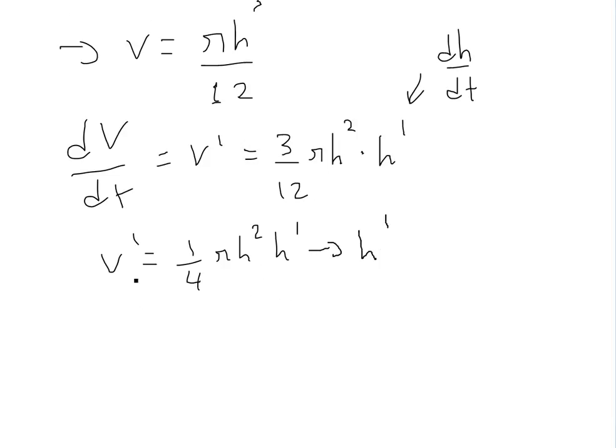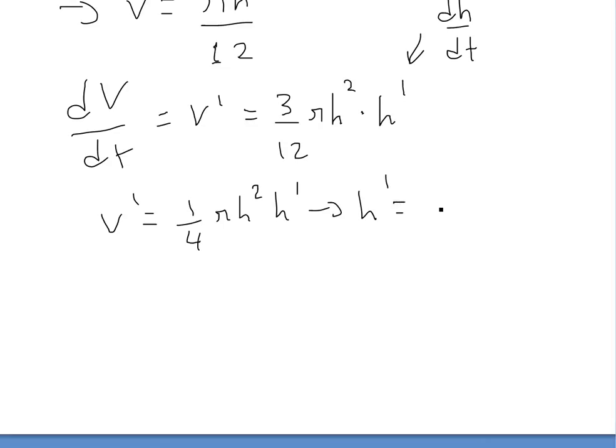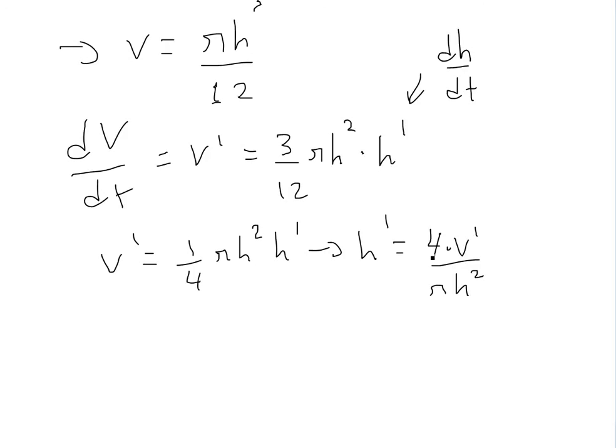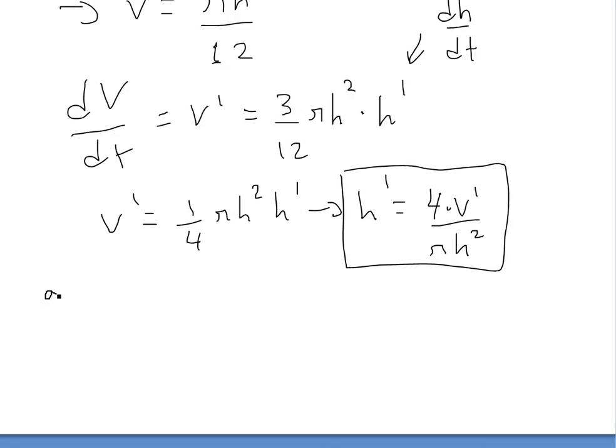Now we can solve for h prime in terms of V prime. Basically relate the two rates together. So we'll get 4 times V prime divided by π h² right here. So there is our formula for h prime right here. And we could actually solve the rate at any height. But we're looking at basically at h is equal to three. So we could plug this in, or three meters. So we could plug it in.